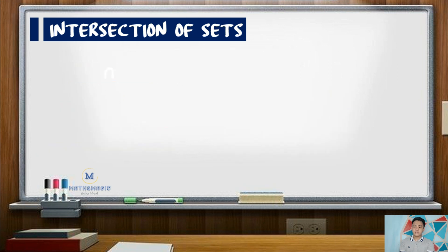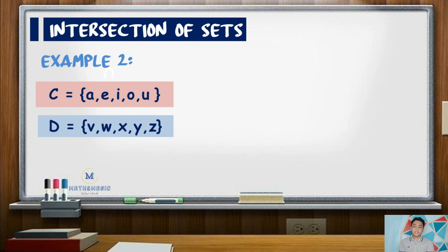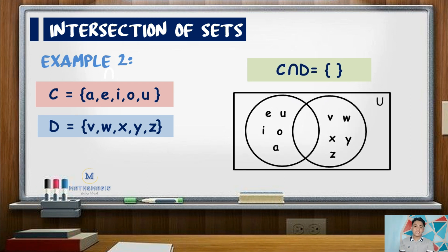Another example: find C intersection D. If set C has the elements A, E, I, O, and U, while set D contains the elements V, W, X, Y, and Z. Here, notice that there is no common element to sets C and D. Thus, C intersection D has no element — it is an empty set. So we will use the symbol for empty set: braces without an element, or the null symbol.